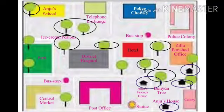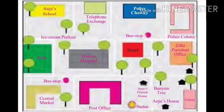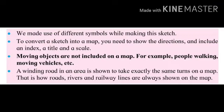Everyone has its own symbol, and we make use of different symbols when making a sketch. To convert a sketch into a map, you need to show the direction and include an index, a title, and a scale. Moving objects are not included on a map — for example, people walking, moving vehicles, etc. Roads, rivers, and railway lines are always shown on the map.